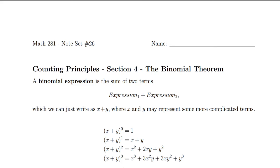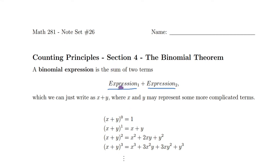Hi everyone. Today we're going to go over our last topic for the course, which is the binomial theorem. A binomial expression is just the sum of two terms. These algebraic expressions — we can call them expression one and expression two — can be something a little more complicated. But to simplify things, let's just consider it as x plus y, where x and y are variables that could represent more complicated terms. If I gave you this binomial expression x plus y and asked you to take powers of it, it turns out those powers will have a somewhat nice pattern to them.